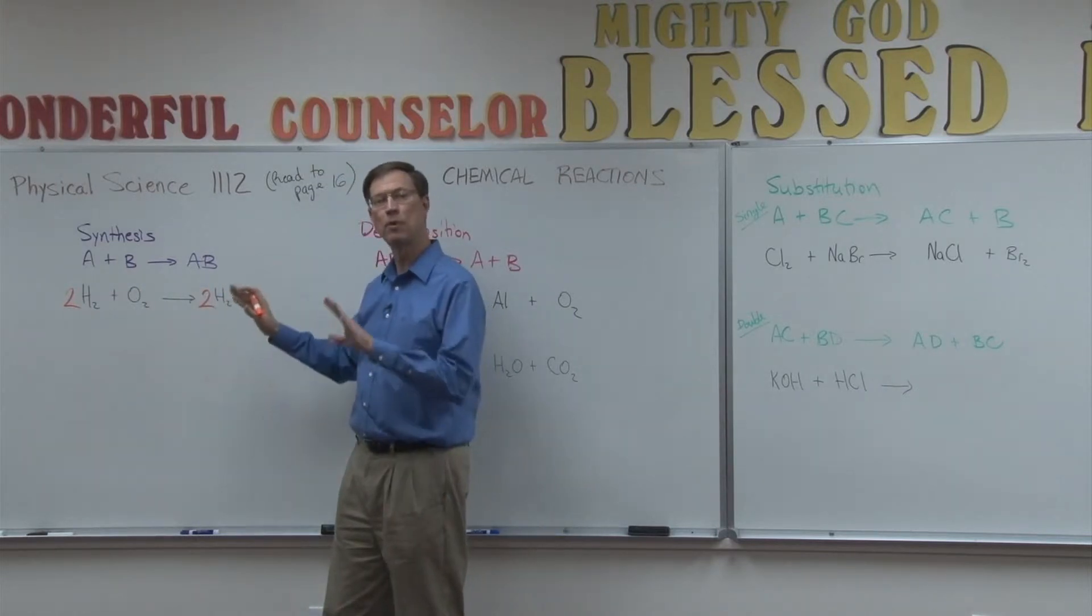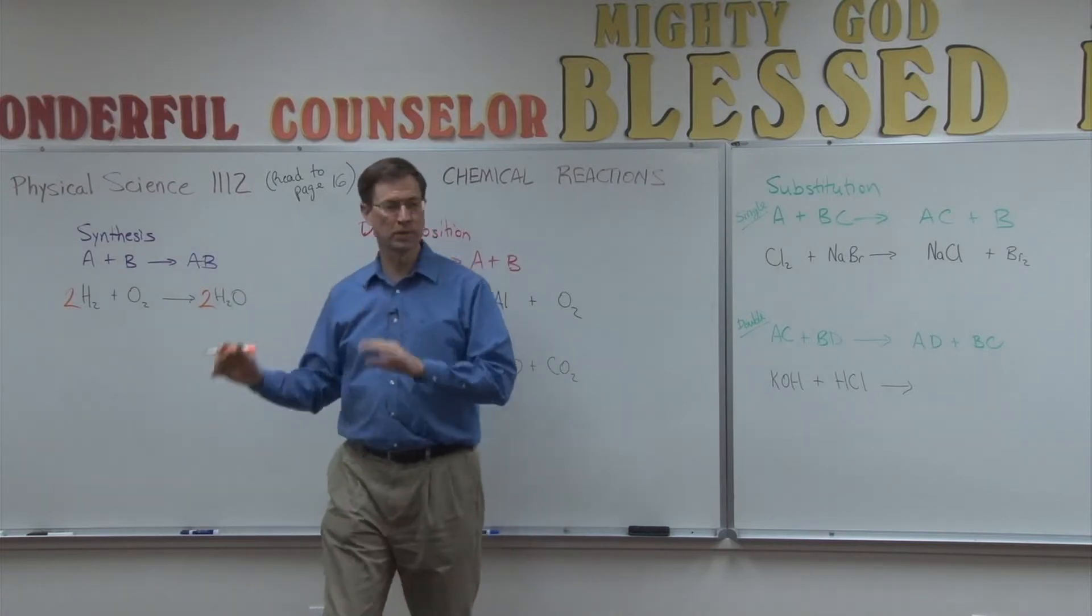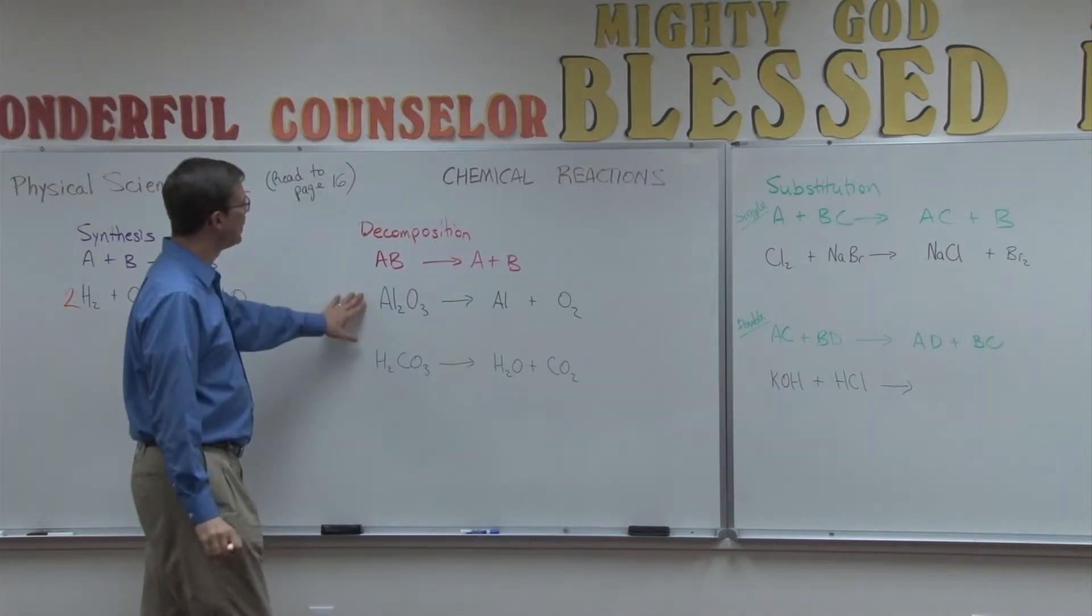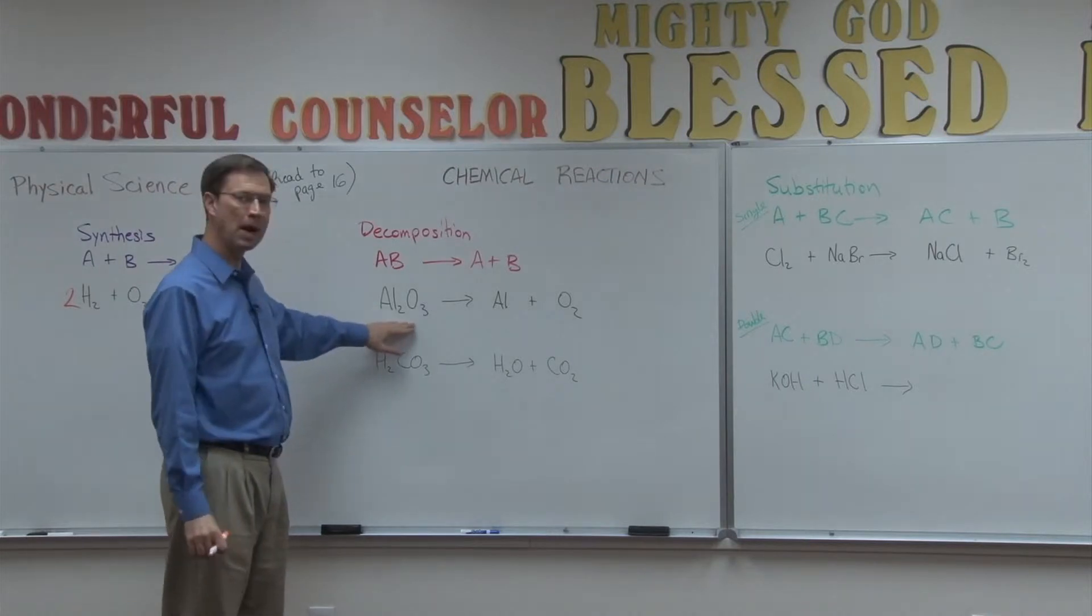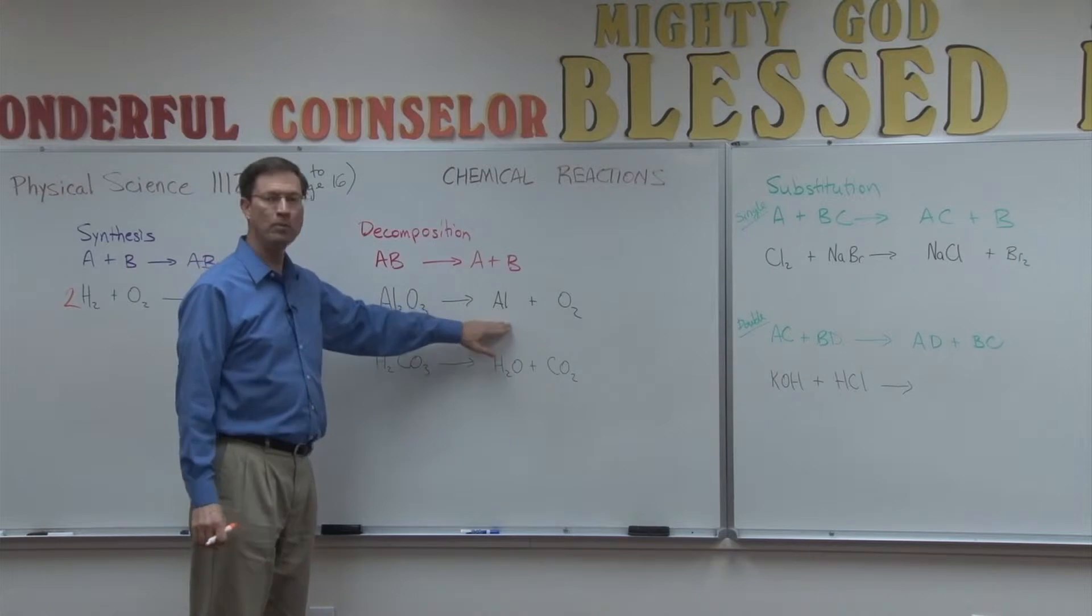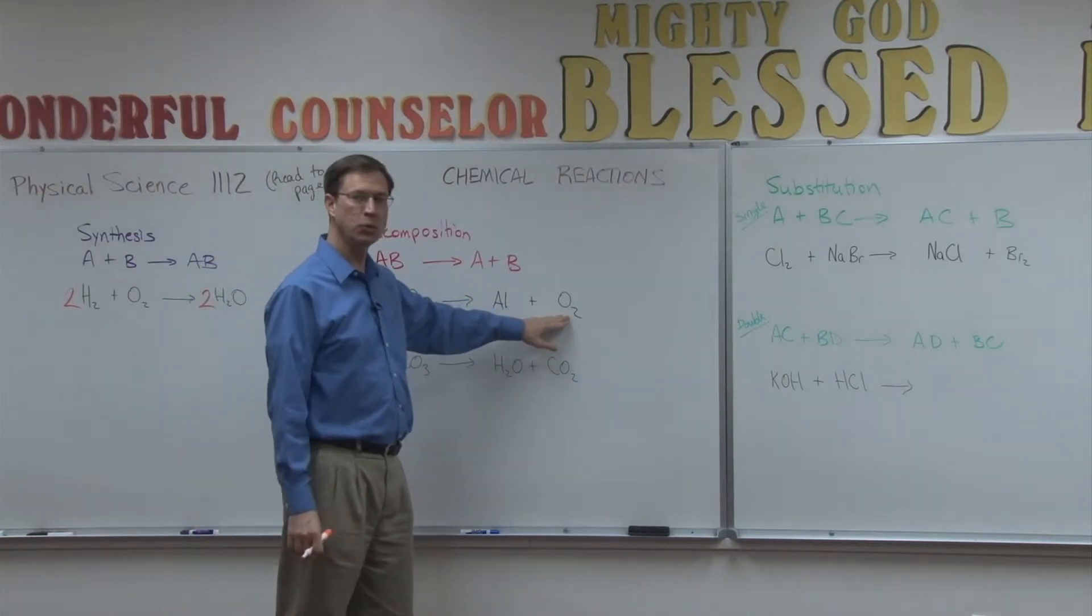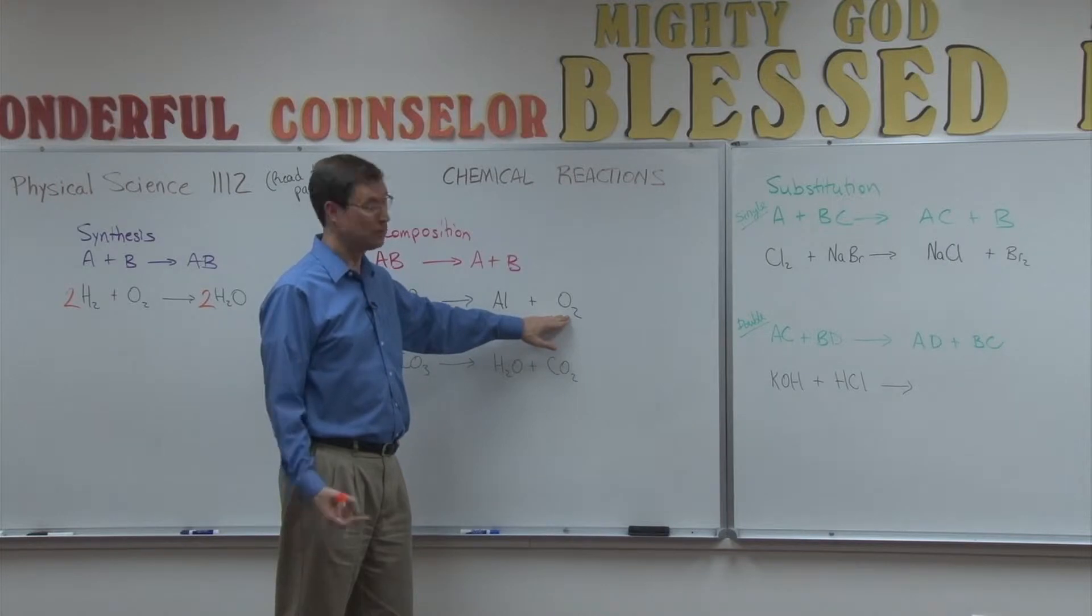In order to be balanced, every element has to have the same number of atoms on both sides. Let's do that here with the decomposition of aluminum oxide. When aluminum oxide breaks down, we know that it forms aluminum and that twin oxygen, just O2.